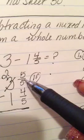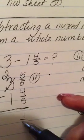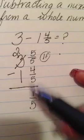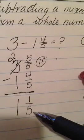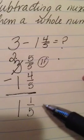Now I can subtract. 5 fifths minus 4 fifths is 1 fifth and 2 minus 1 is 1. It's definitely not improper and it's already simplified, so I'm done.